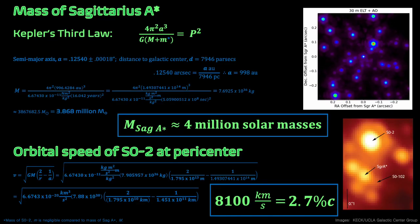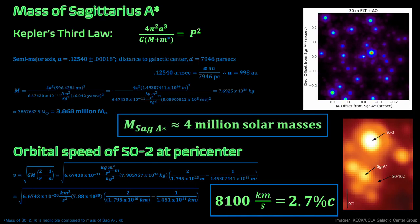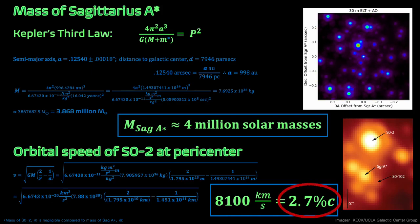First, I confirm SO2 orbits a supermassive black hole and find the black hole's mass, using Kepler's third law. I then calculate that SO2 reaches 2.7% the speed of light. This is consistent with Ghez's research.